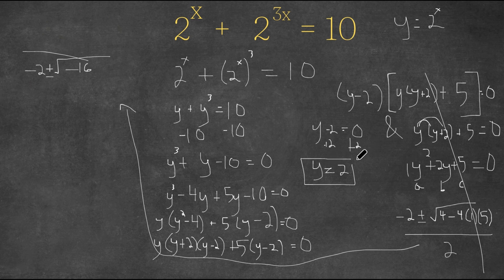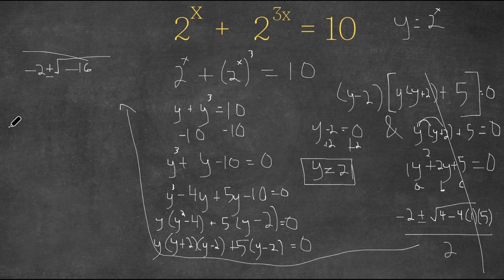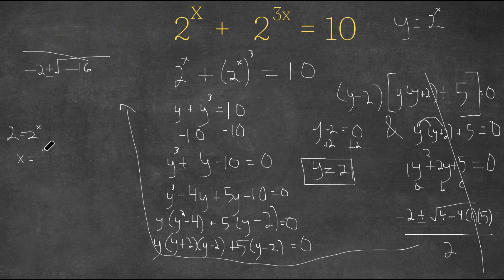So our only solution is y equals 2. Since we already know that y equals 2 to the power of x, and y equals 2, we have 2 equals 2 to the power of x. What power of 2 equals 2? It's 1, because anything to the power of 1 equals itself, meaning x equals 1.